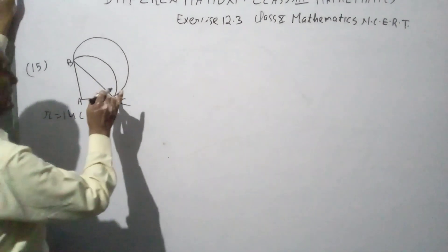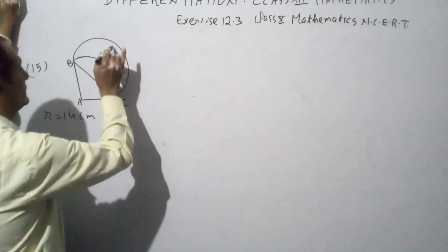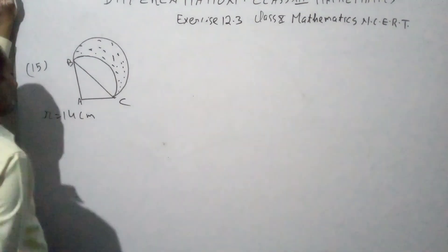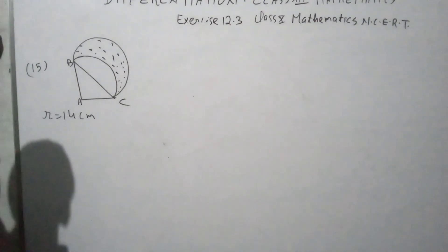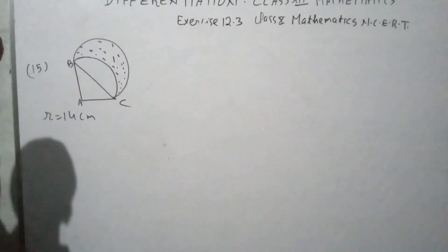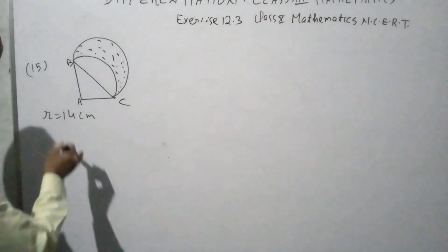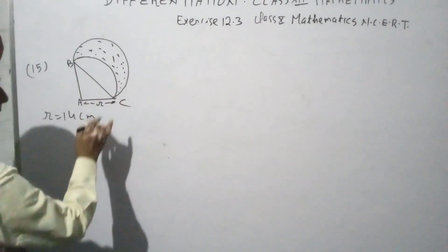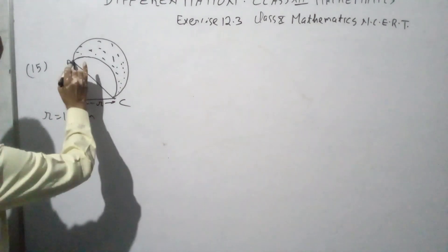Area of shaded region. The radius of the quadrant is 14 centimeters, so the radius of the quadrant is A.